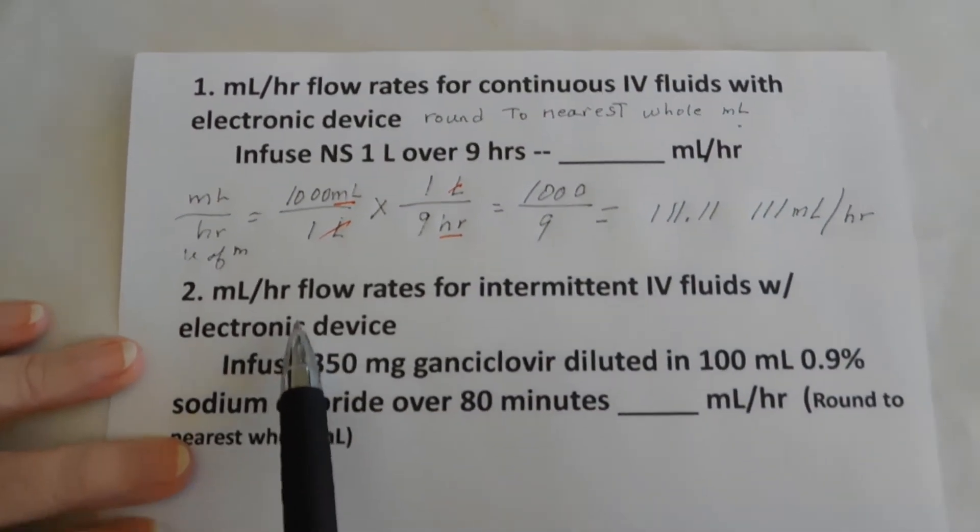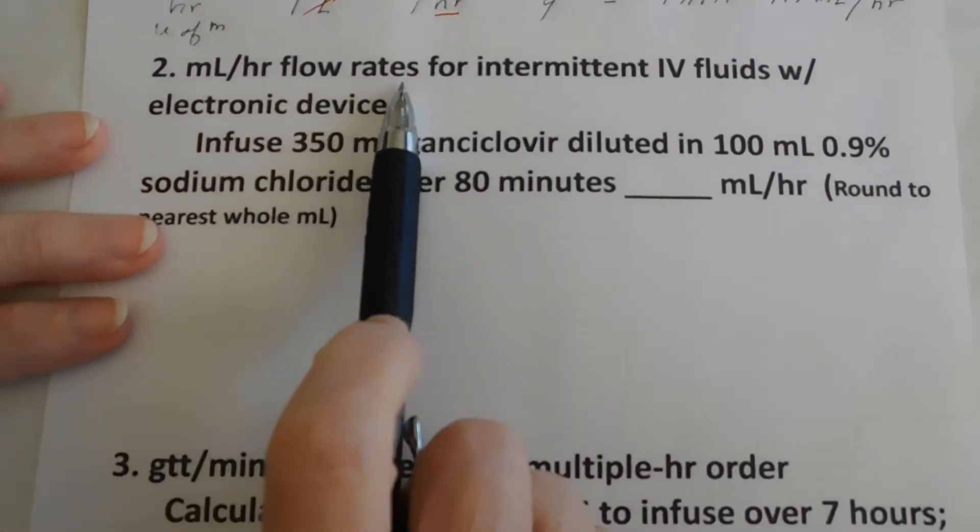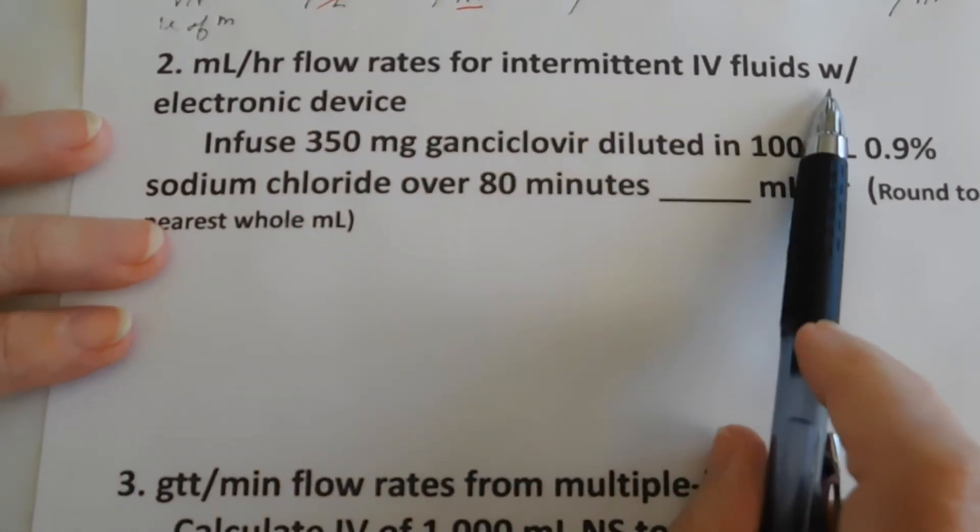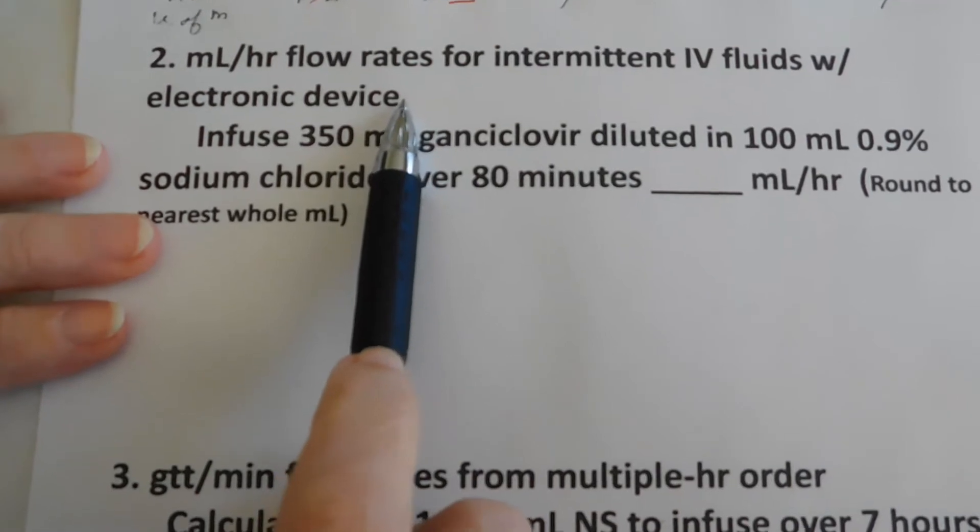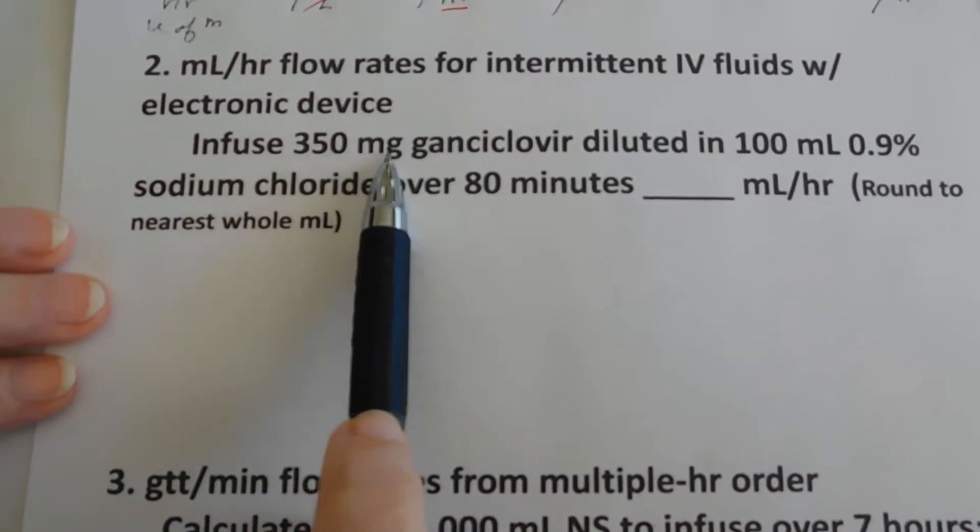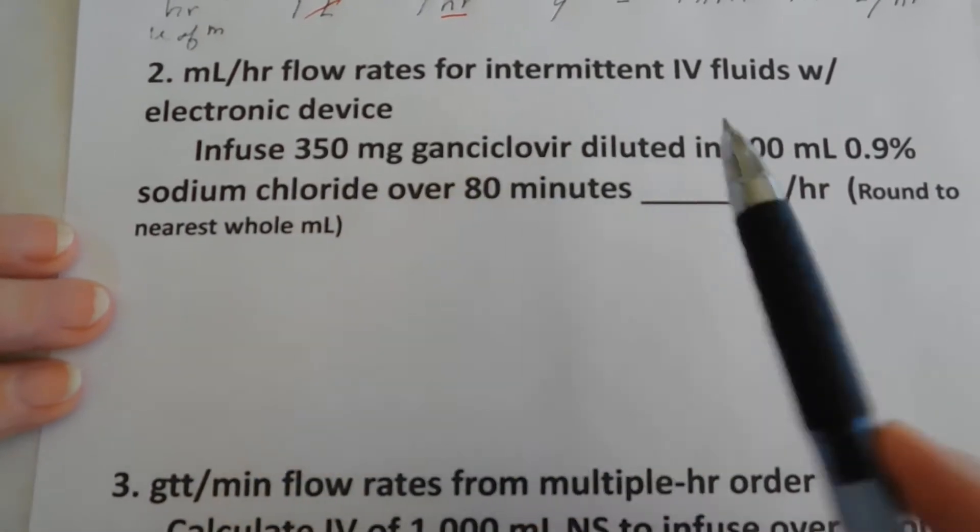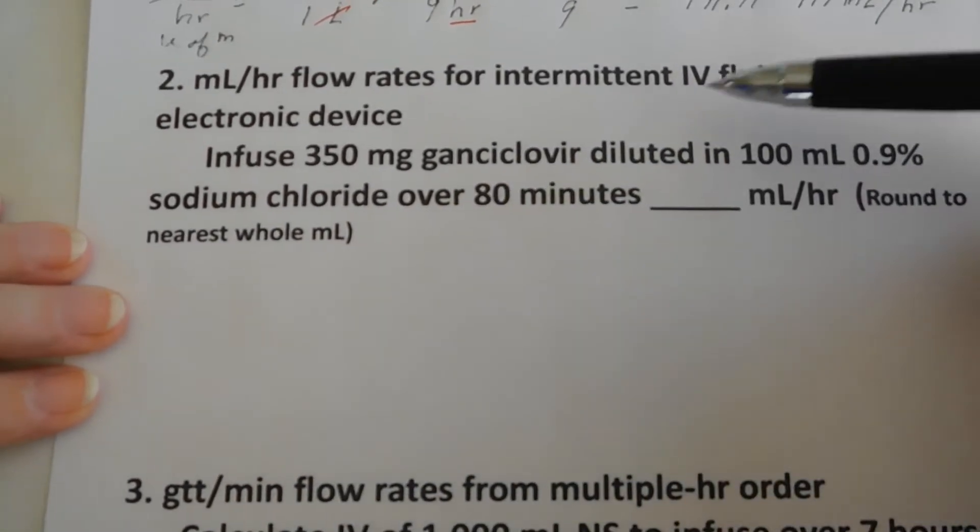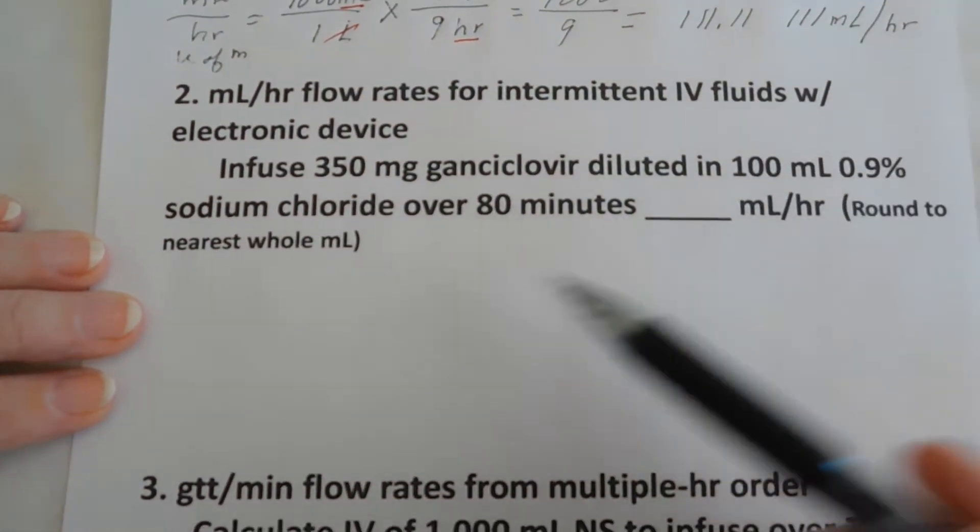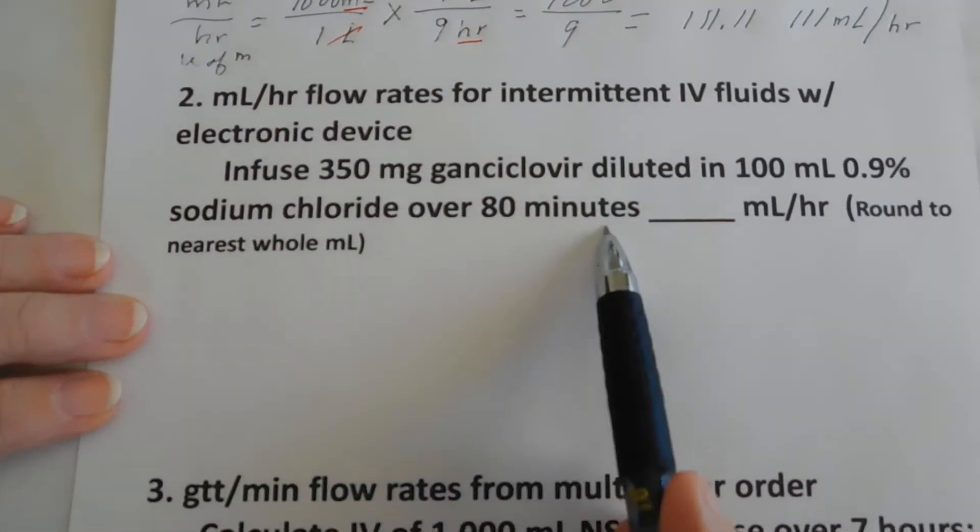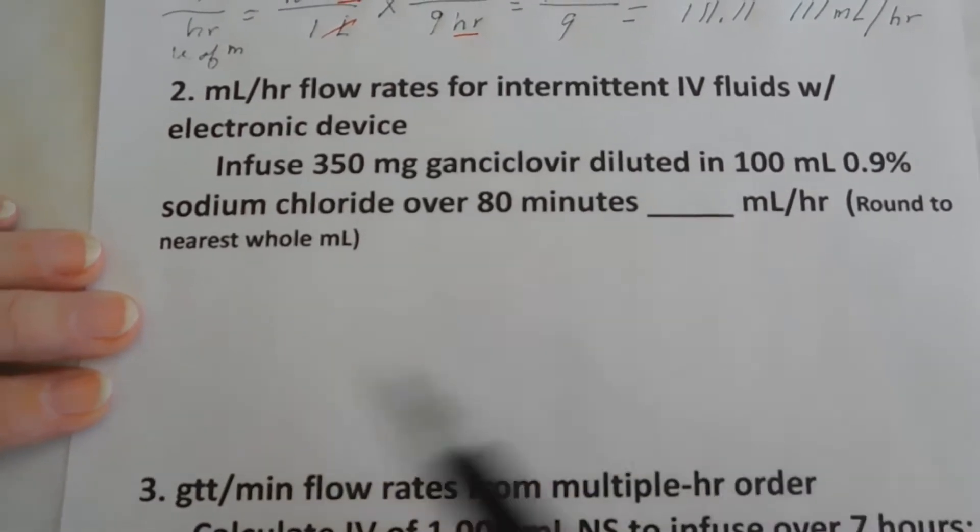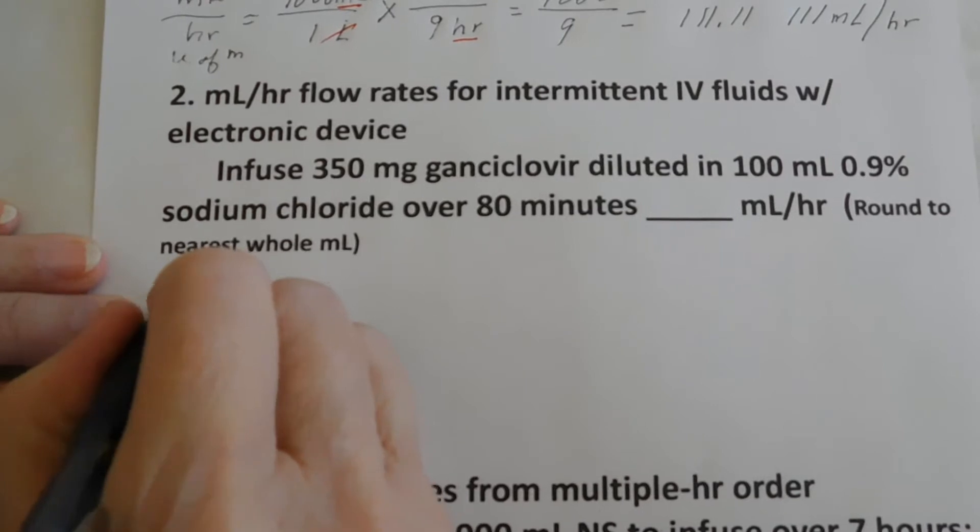And our next problem, we are calculating milliliters per hour flow rates for intermittent IV fluids using probably an IV pump. So we're going to infuse 350 milligrams of ganciclovir, which is an antiviral medication. It's diluted in 100 milliliters of 0.9% sodium chloride. We're going to infuse over 80 minutes. Our units of measure is milliliters per hour.